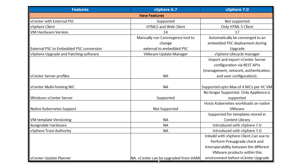Next is assignable hardware, introduced with vSphere 7.0. Assignable hardware provides a flexible mechanism to assign hardware accelerators to workloads. It identifies hardware accelerators by device attributes rather than by hardware device ID, which allows a level of abstraction for PCI devices and simplifies hardware assignment to virtual machines.